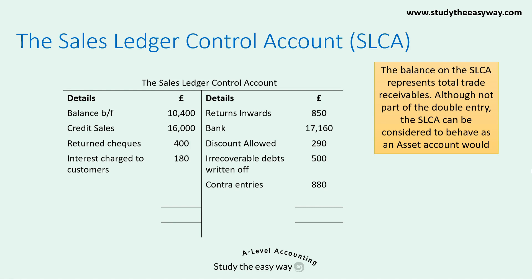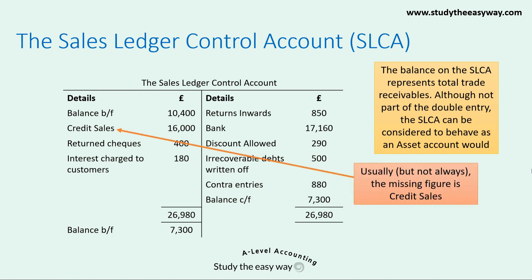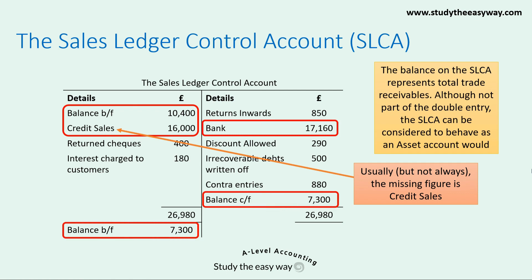Once all items have been recorded, the account is balanced in the normal way. Usually, but not always, the missing figure in incomplete records questions is the credit sales figure. You'll typically find that incomplete records questions have a simplified version of the control account, including balances at the start and end of the year, the bank figure, and the missing credit sales figure. As before, other items may also be included in the question, so look out for those.